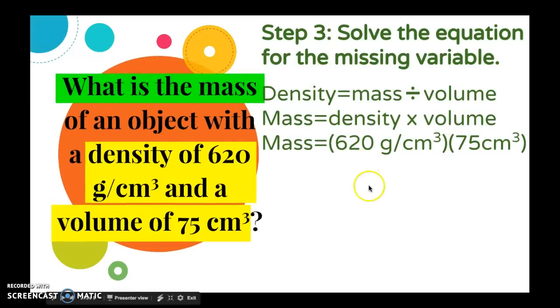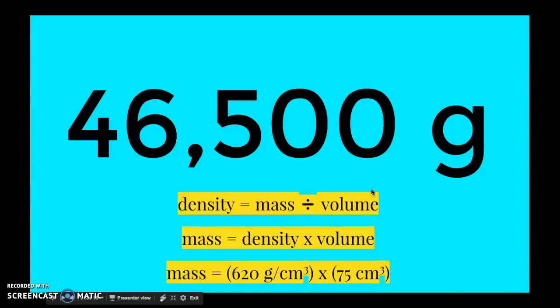So 620 times 75, your answer should be 46,500 grams. You'll notice down here that on the top and bottom of an equation, we have cubic centimeters. That's why those units disappeared and left us with grams for mass. When we take 620 grams per cubic centimeter times cubic centimeters, they cancel each other out. What's on the top and the bottom, if they're the same, you can cancel it out.